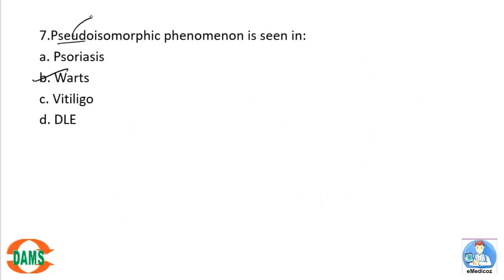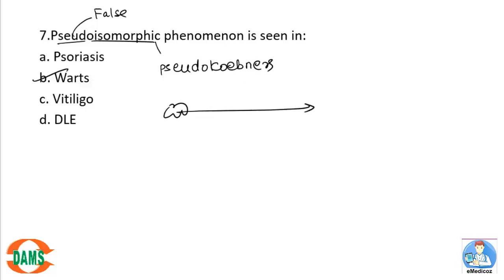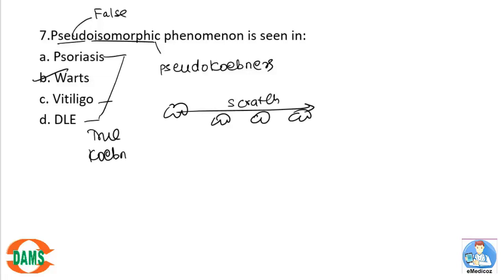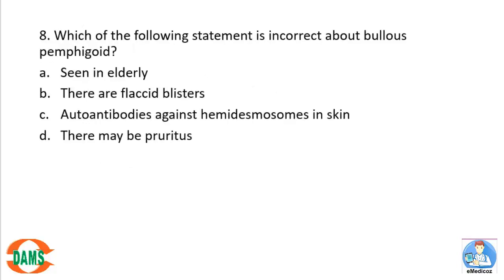Pseudo-isomorphic phenomenon (pseudo-Koebner's) is seen in warts: linear trauma produces new lesions along the scratch line. True Koebner's is seen in psoriasis, vitiligo, and DLE (autoimmune diseases). In warts (viral), it's pseudo-Koebner's. For Question 8 about bullous pemphigoid: 'flaccid blisters' is the incorrect statement — bullous pemphigoid produces TENSE blisters, not flaccid. Antibodies against hemidesmosome and pruritus are correct features. The answer is tense blisters, not flaccid.